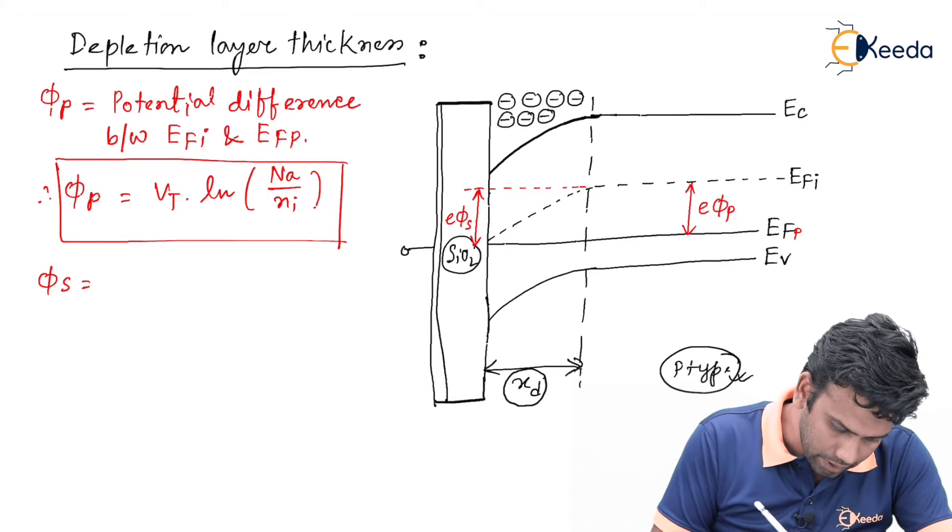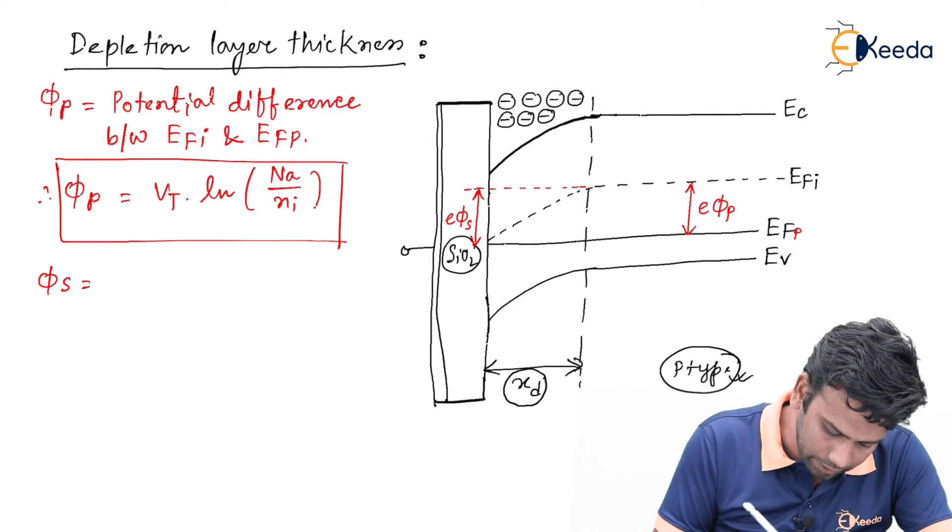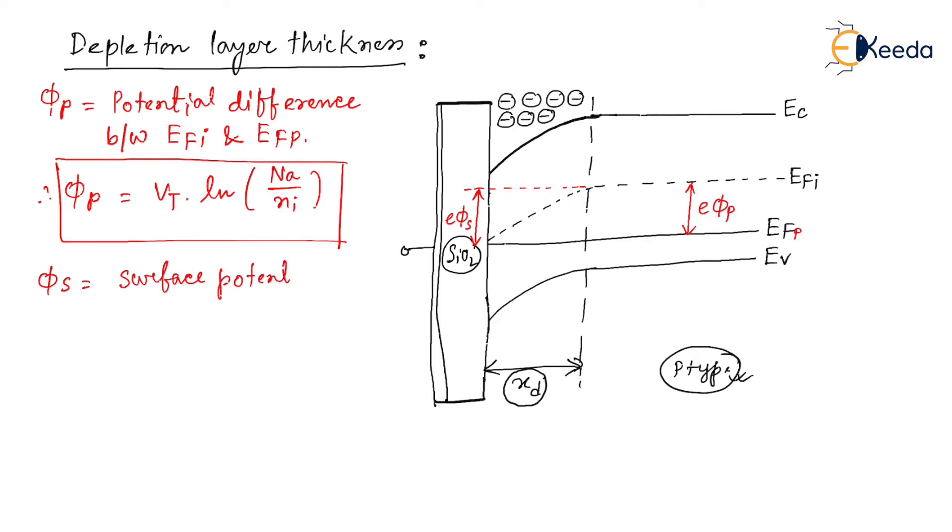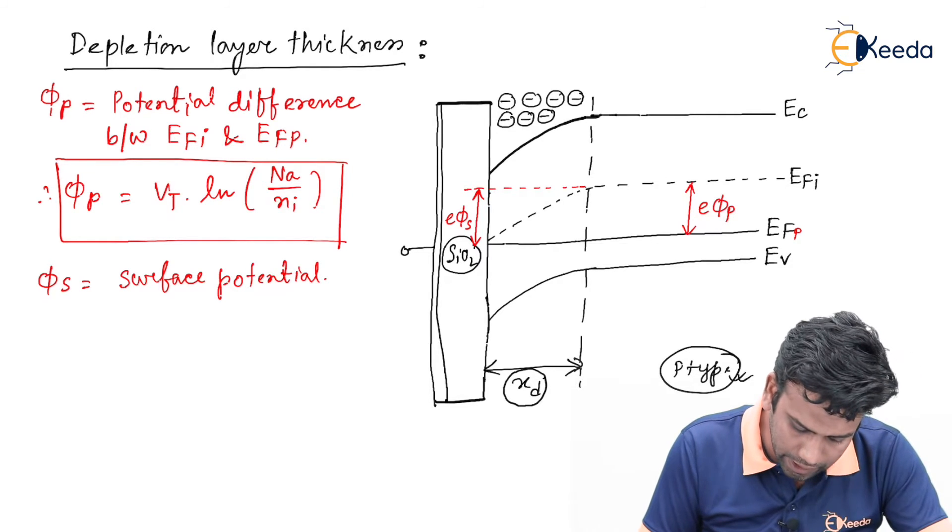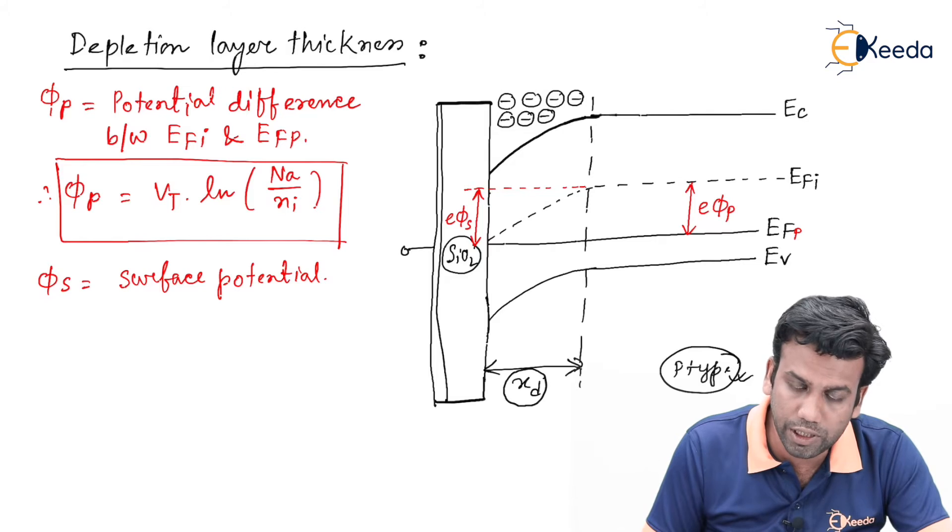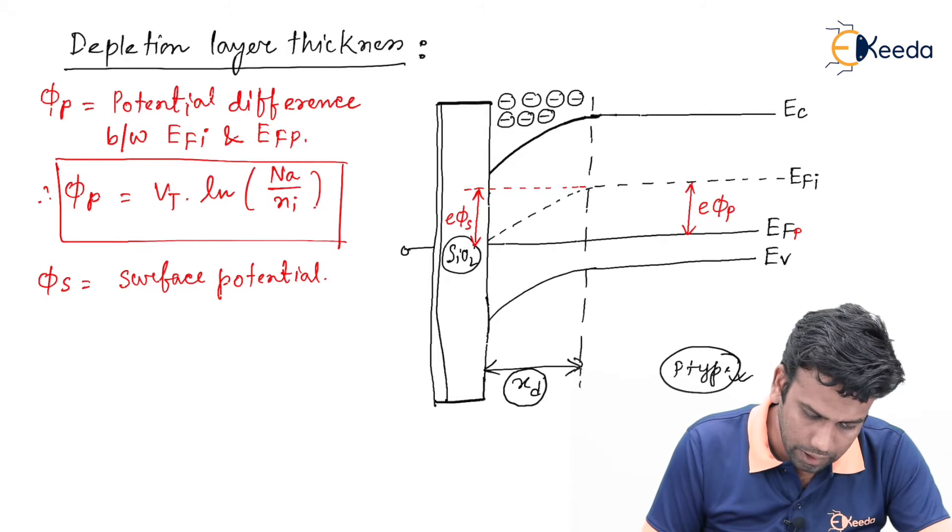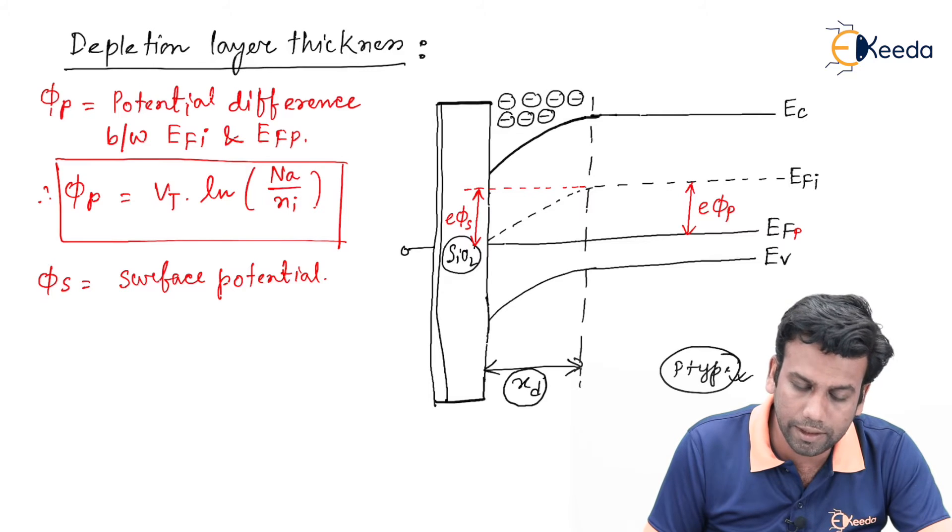Phi S is the surface potential, or we can say it is the difference between the E Fermi measured in the bulk and at the surface.